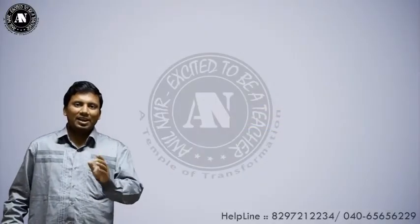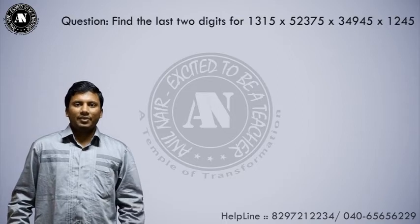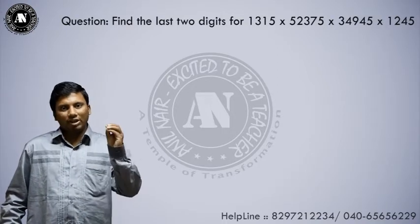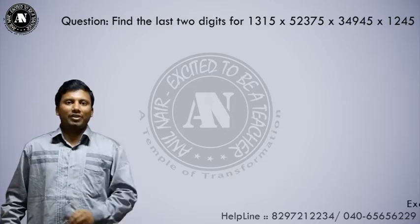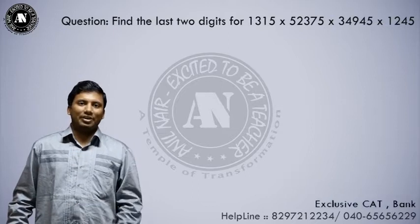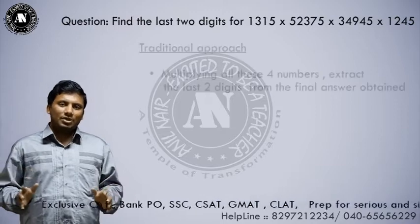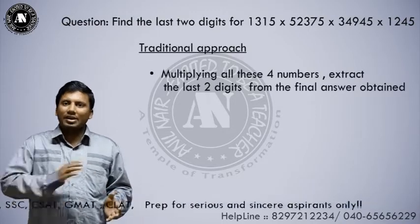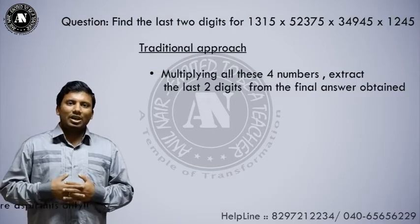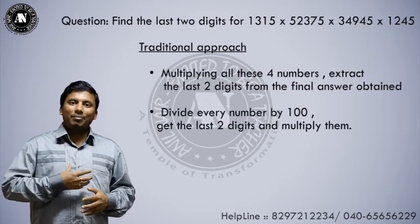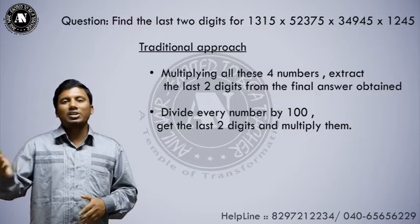Hi all, my name is Anil Nayar. Consider this problem on the screen: find the last two digits for 1315 into 52375 into 34945 into 1245. The traditional approach is to multiply these four numbers and get the last two digits. Another way is to divide every number by 100, get the last two digits, and multiply the last two digits of all four numbers.